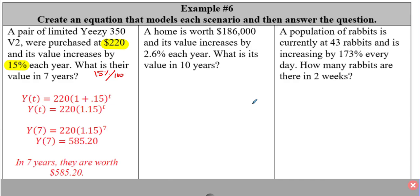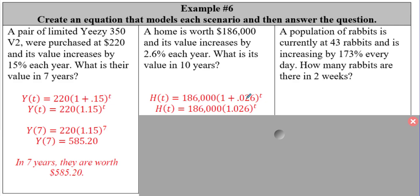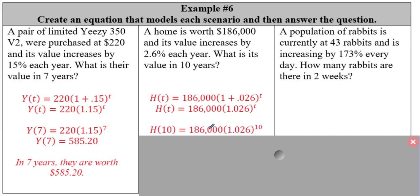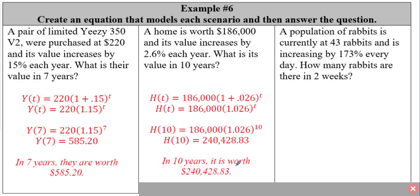Word problem two: a home worth $186,000 increases in value. Using h of t, with initial value 186,000 and 2.6% converted to 0.026, the function is h of t equals 186,000 times 1.026 to the t. Plugging in t equals 10 gives approximately $240,000 — an increase of about $54,000 over 10 years.